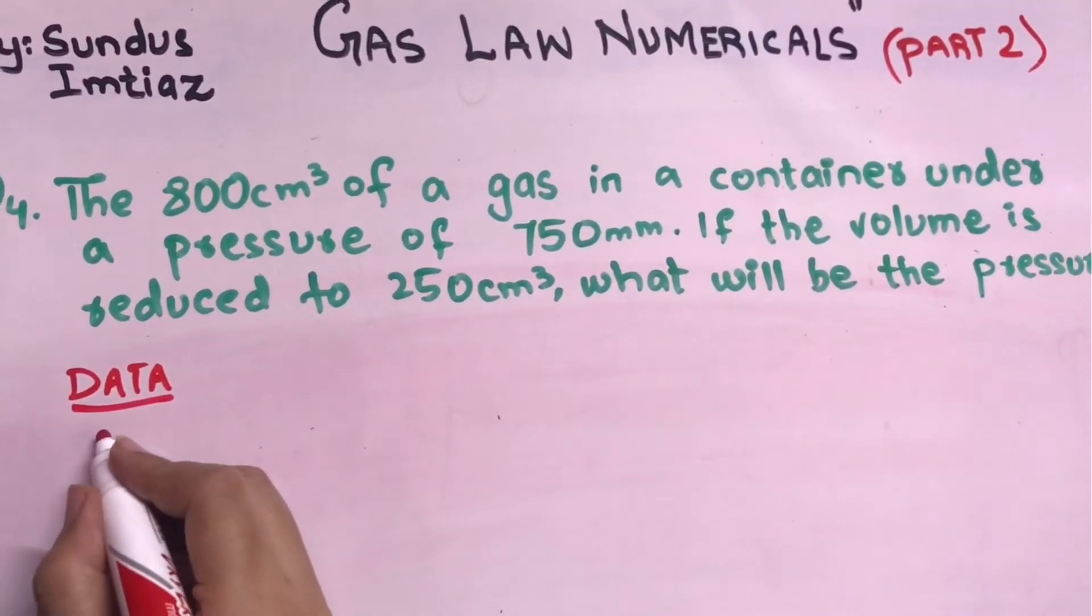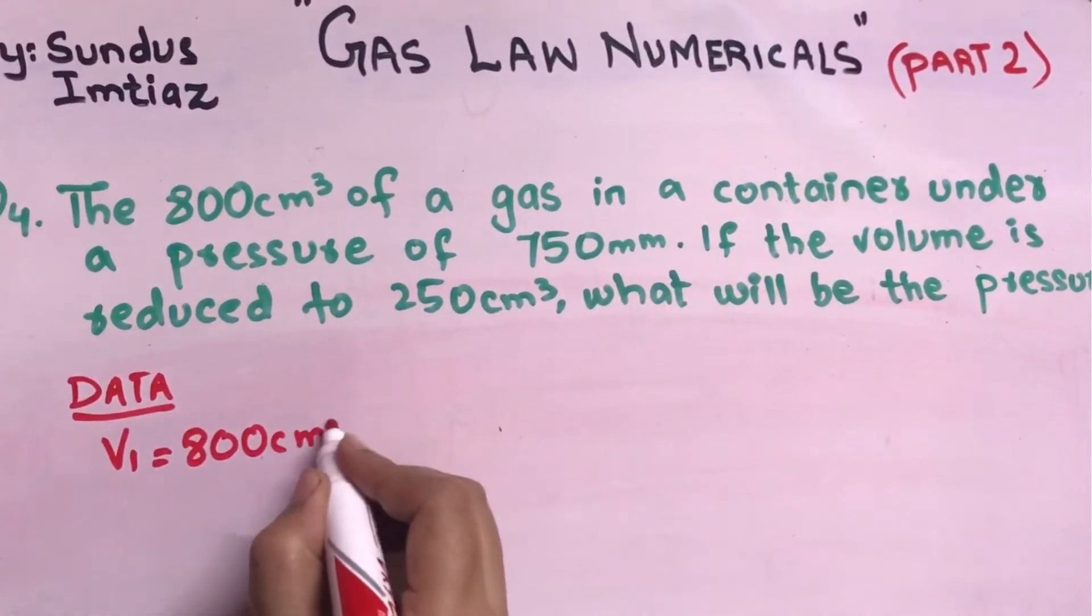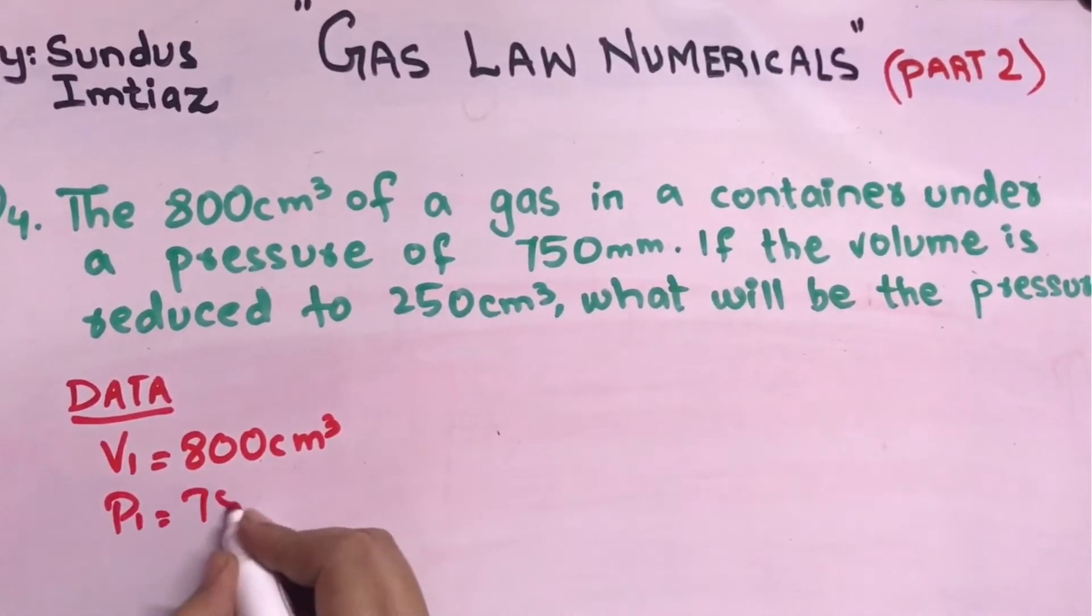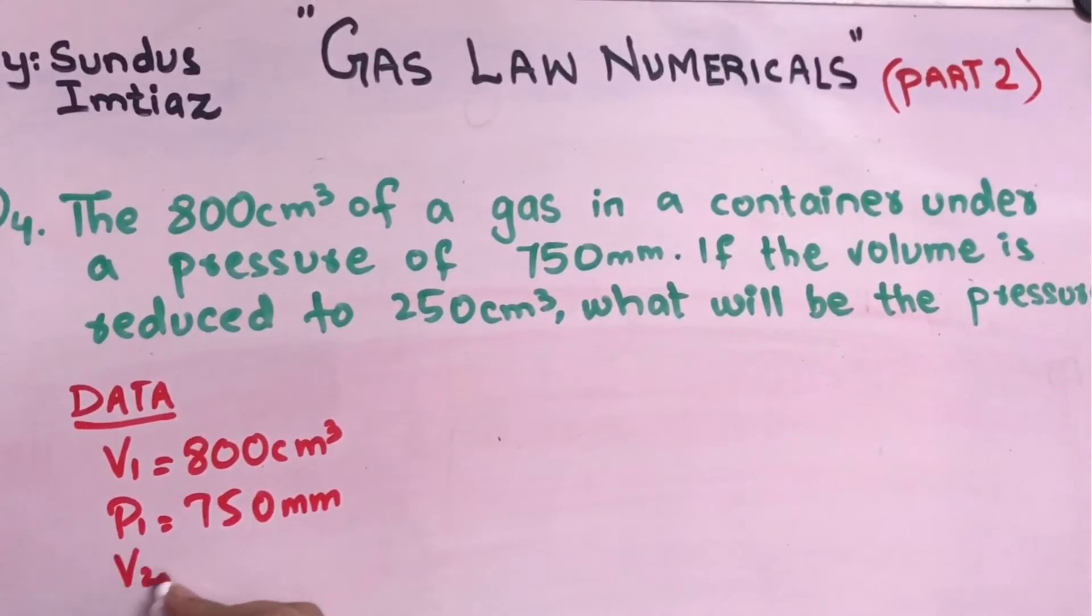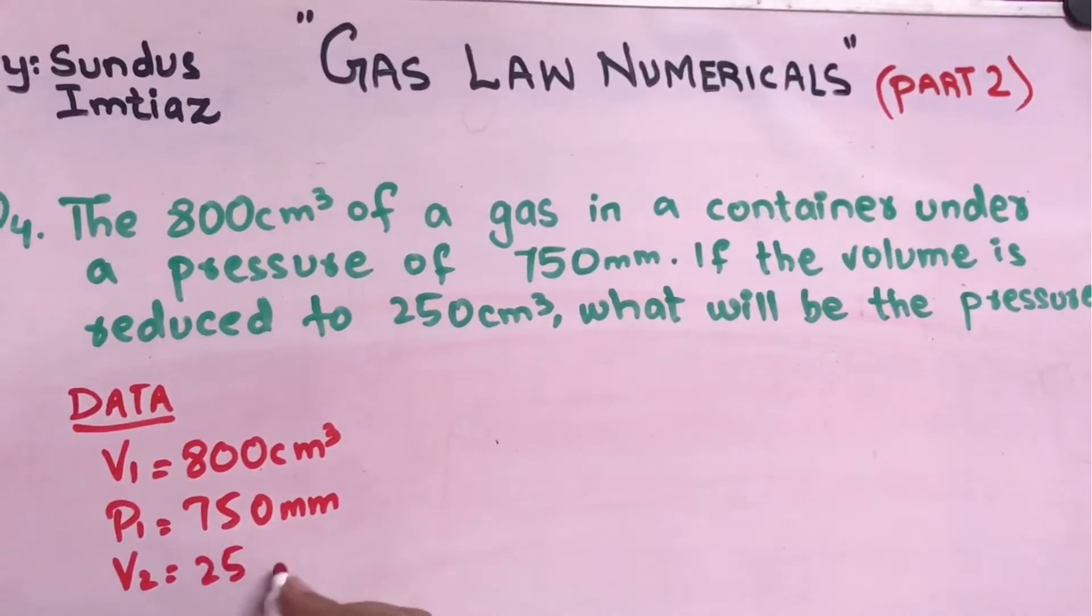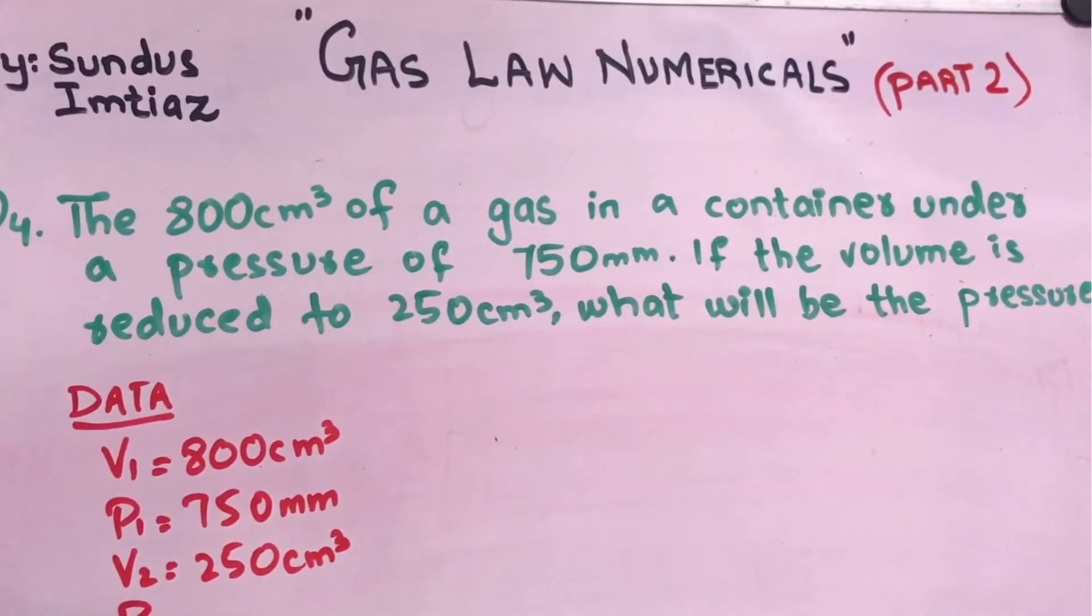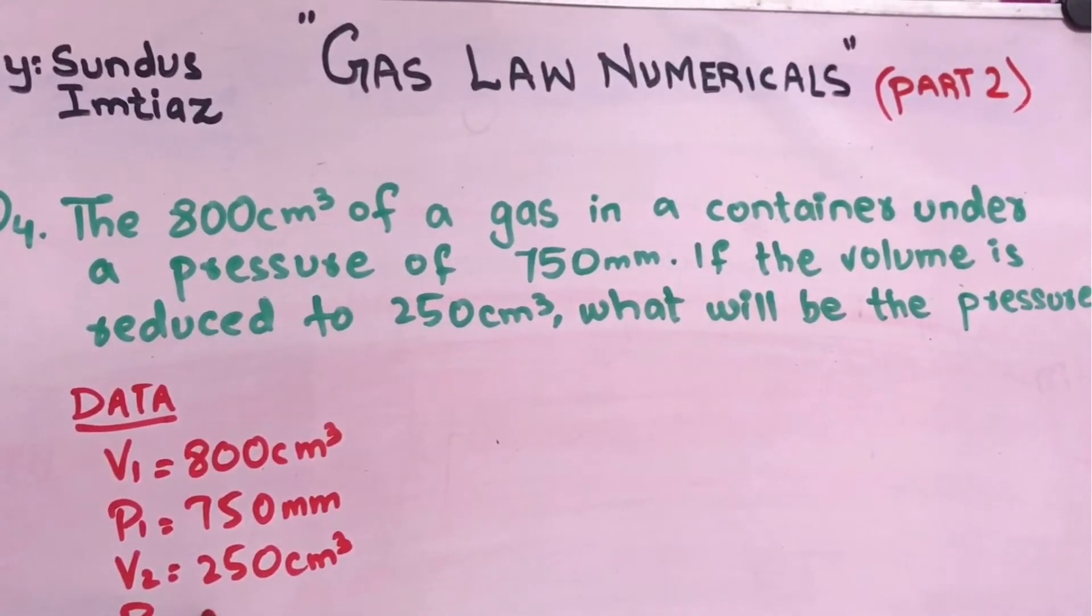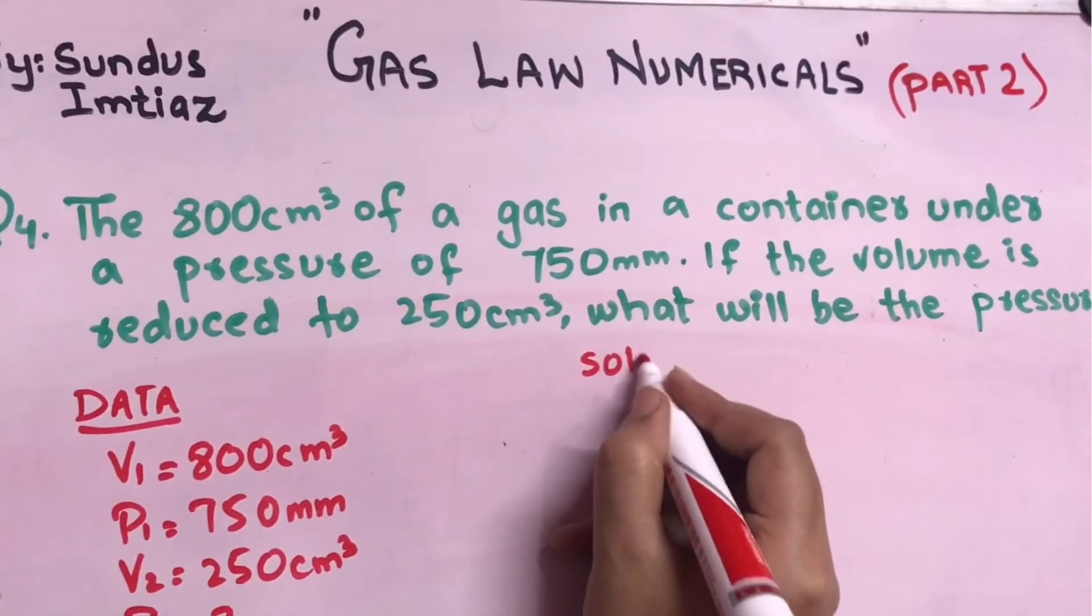So let's make a data first. In the data part we have v1 800 centimeter cube, p1 750 millimeter, and v2 they have reduced the pressure to 250 centimeter cube. Now they are wanting us to find the final pressure.